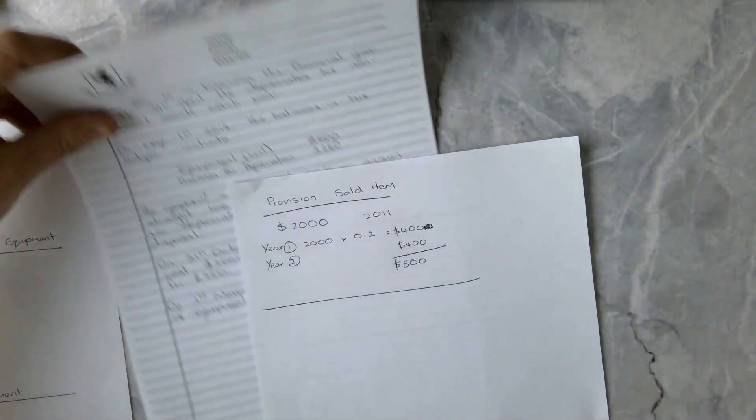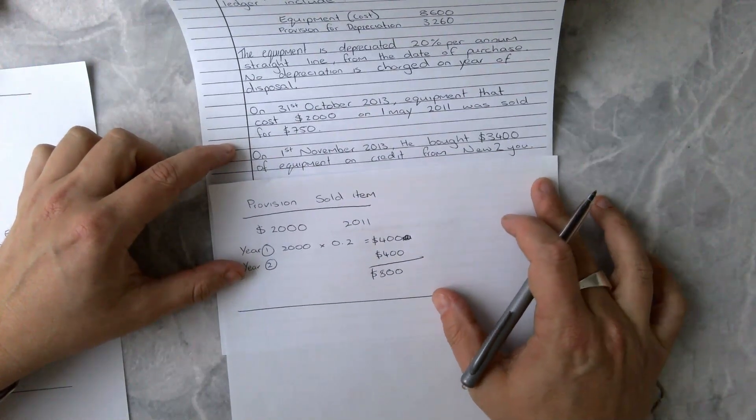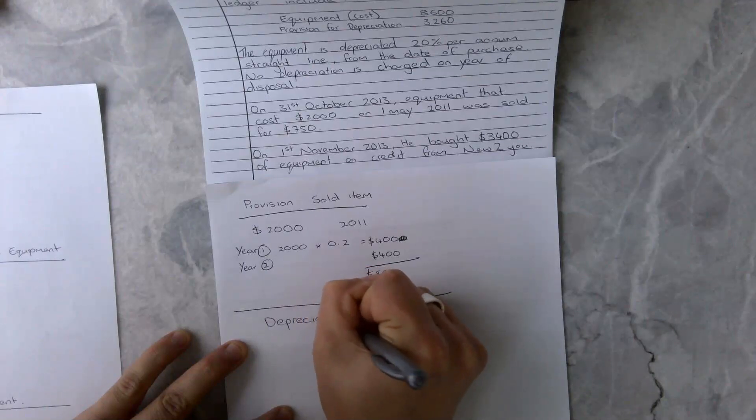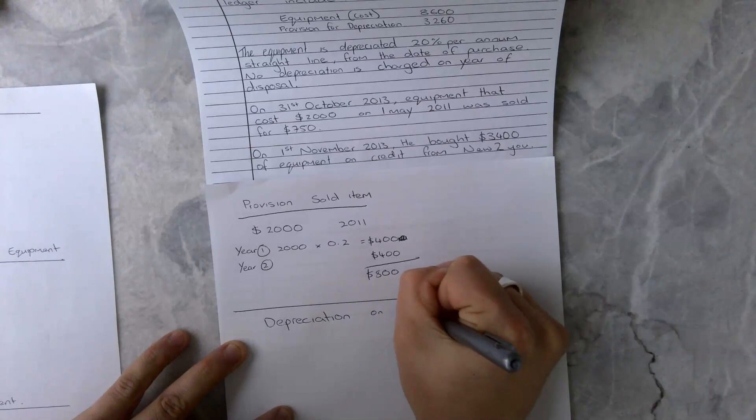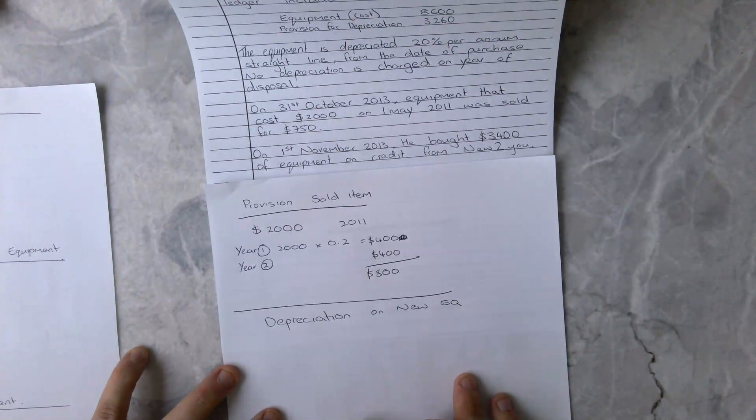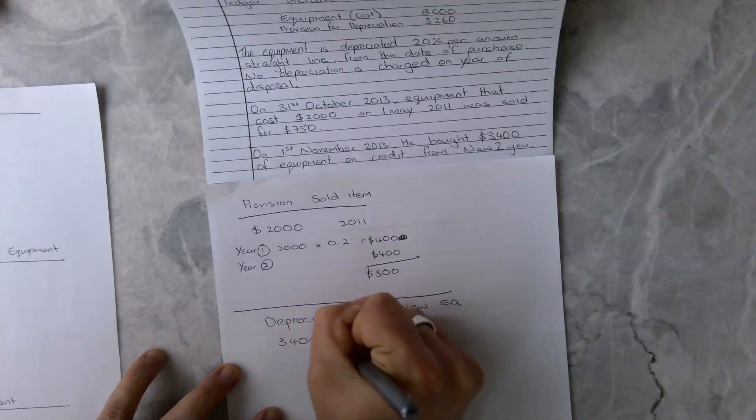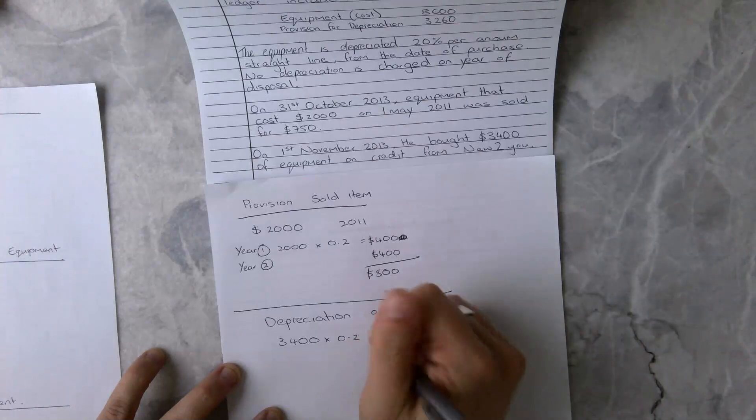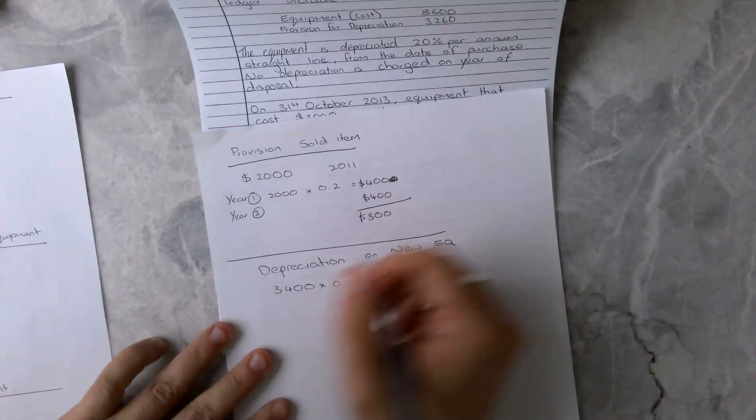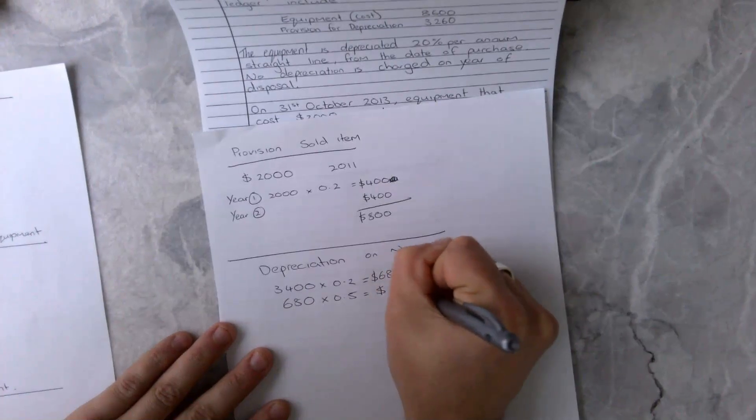What I'm going to move on to now is do the calculations for part two. We're going to look at the equipment that we had bought. So I'm going to write depreciation on new equipment. Our new equipment is bought on November 1st, and it cost us $3,400. We know that $3,400 needs to be times by 0.2 to get to our number. That equals $680. But we've only had that for half a year, so we need to divide that by two. So it's 680 times by 0.5 because we've only had it for six months. So our total depreciation on that will be $340.